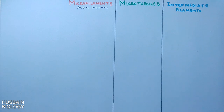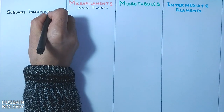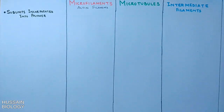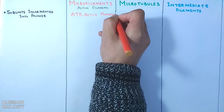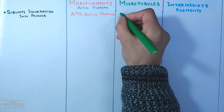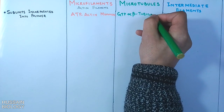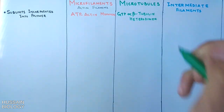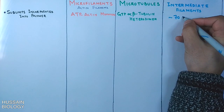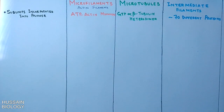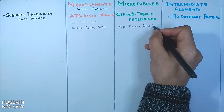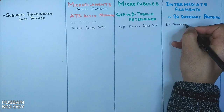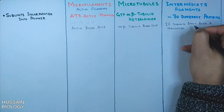First, let's see what subunits are incorporated into the polymer. In microfilaments we have ATP actin monomers. In microtubules we have GTP alpha-beta tubulin heterodimers, whereas in intermediate filaments there are more than 70 different proteins. So actin filaments bind ATP, alpha-beta tubulin binds GTP, and intermediate filaments do not bind any nucleotide.